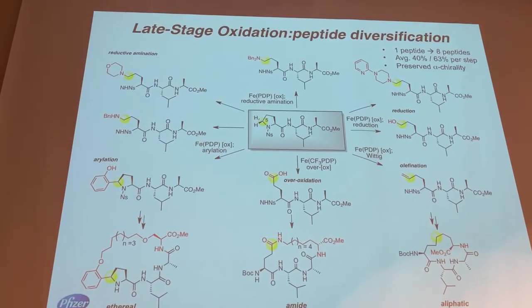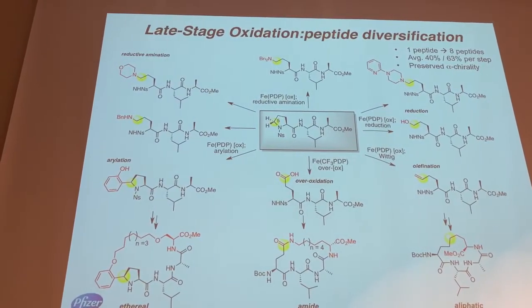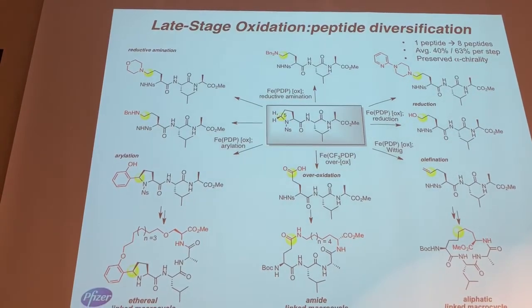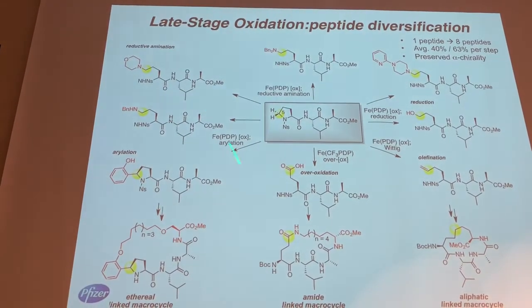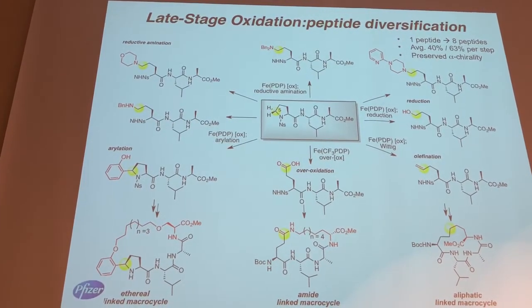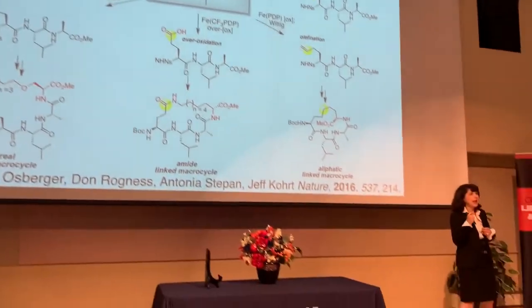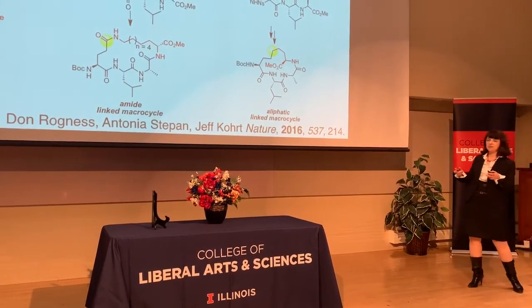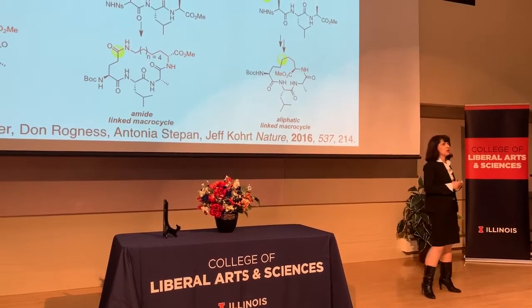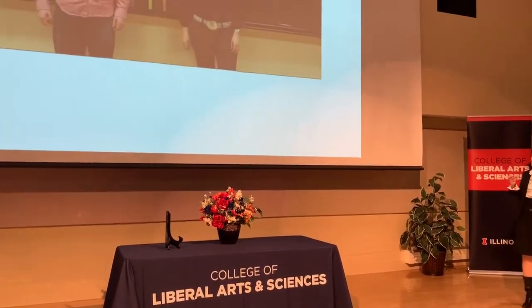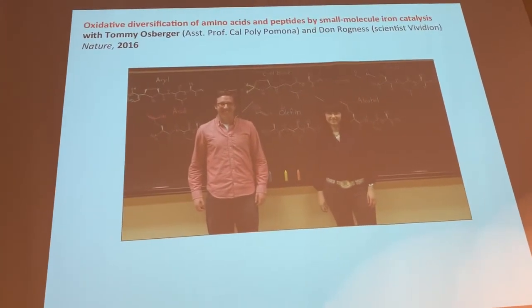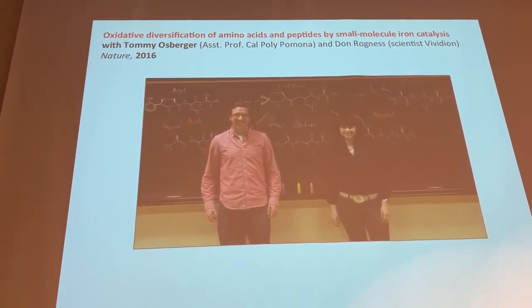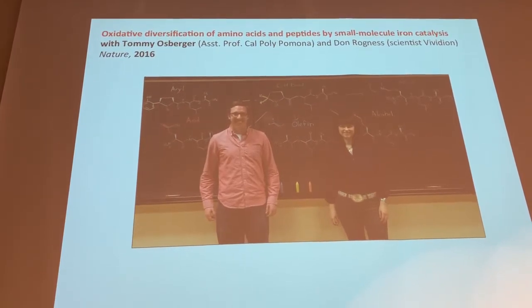We've partnered with Pfizer and shown other ways to create diversity using this catalysis as nature does. For example, you can take one peptide and create eight different peptides. If you were to do this by conventional synthetic organic chemistry, you would need eight de novo syntheses, including synthesizing unnatural amino acids in optically pure form. This has led to molecules they're currently testing. This very challenging work on new, complicated scaffolds was pioneered by a great student in my group, Tommy Osberger, along with postdoctoral fellow Don Rogen.